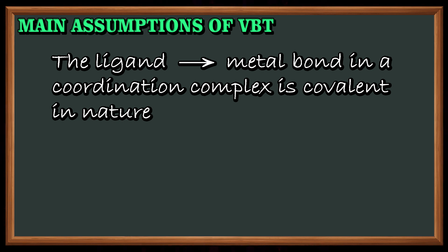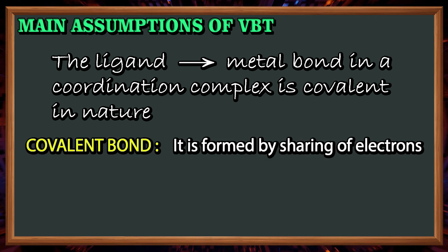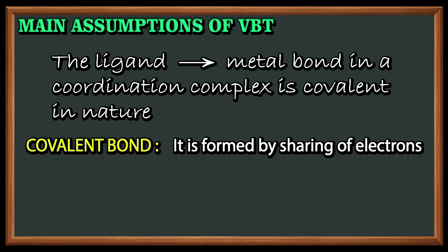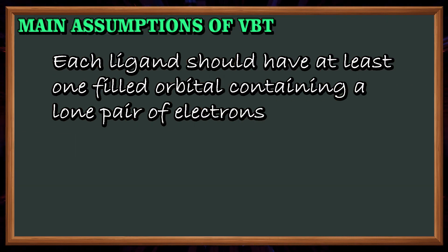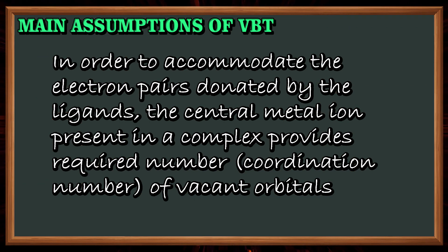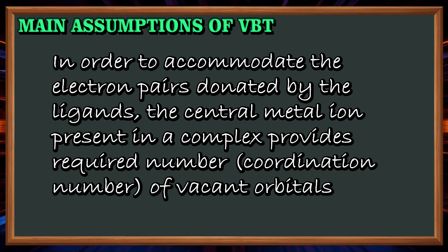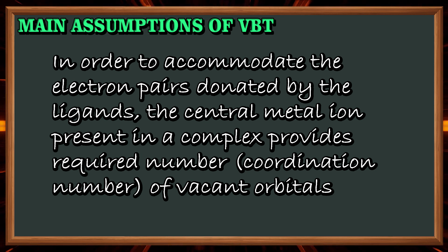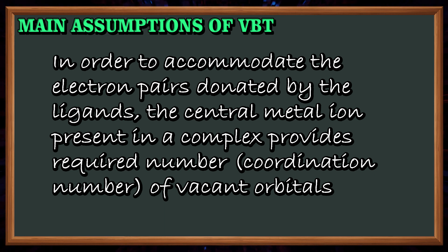Main assumptions of Valence Bond Theory: The ligand-metal bond in a coordination complex is covalent in nature, formed by sharing of electrons. Each ligand should have at least one filled orbital containing a lone pair of electrons. In order to accommodate the electron pairs donated by the ligands, the central metal ion provides the required number — equal to its coordination number — of vacant orbitals.